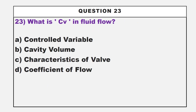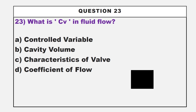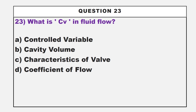What is CV in fluid flow? Option A: controlled variable. Option B: cavity volume. Option C: characteristics of valve. Option D: coefficient of flow. The correct answer is option D, coefficient of flow. CV actually denotes the coefficient of flow.